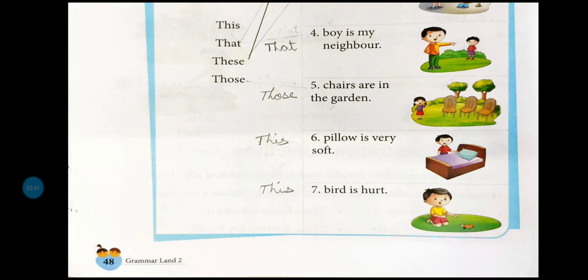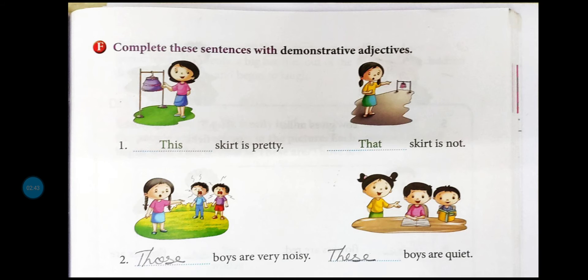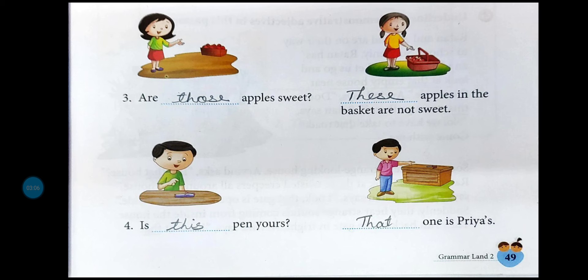Complete these sentences with demonstrative adjectives. آپ لوگوں کو this, that, these, and those کا use کر کے complete کرنے ہیں sentences کو۔ یہاں پاس میں ہے تو this skirt is pretty. دور رکھی ہوئی ہے تو that skirt is not. دیکھو یہ دور ہے boys - those boys are very noisy. یہ پاس میں ہے plural ہے - these boys are quiet. Are those apples sweet? Plural ہے اور دور ہے۔ These apples in the basket are not sweet. Is this pen yours? Plural ہے اور نزدیک میں ہے۔ That one is Priya's - دور رکھی ہوئی ہے۔